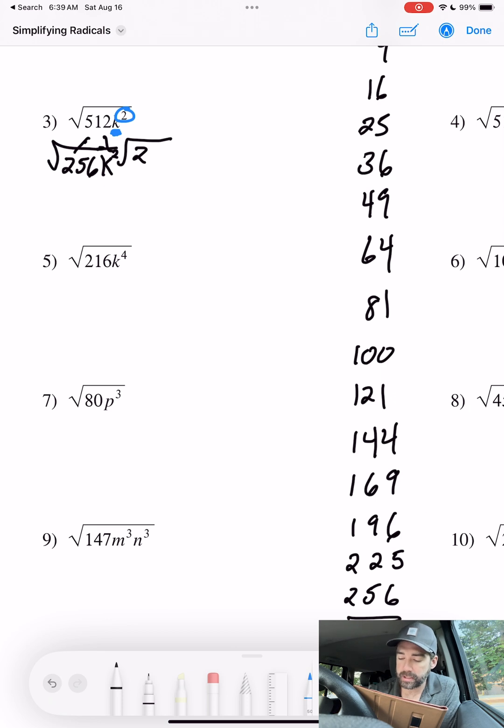It is 16 times 16, so the answer is 16. What is the square root of k squared? That's asking what times itself is giving you k squared? That answer is k.